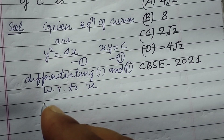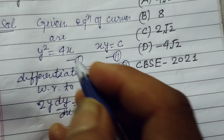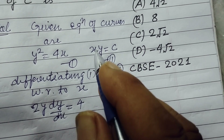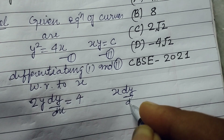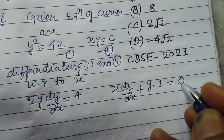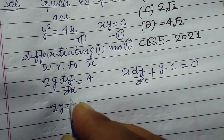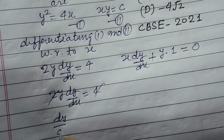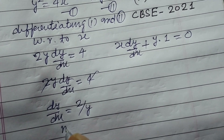So y² differentiation is 2y dy/dx, and 4x differentiation is 4. We differentiate the second with the product rule. So x dy/dx + y·1 = 0. From here, 2y dy/dx = 4 and dy/dx = 2/y. So this is gradient m1.